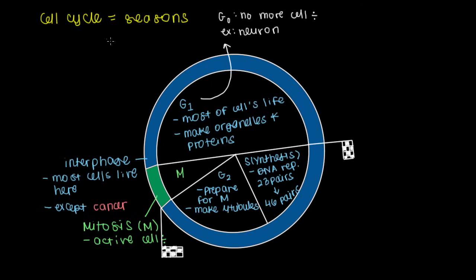And there are a couple of proteins that regulate this process. Two main ones are called cyclin-dependent kinases, which as you may recall, a kinase is something that adds a phosphate group.